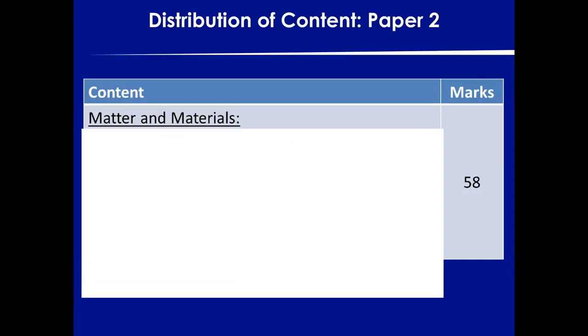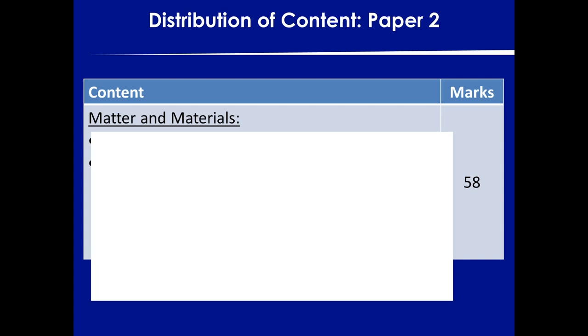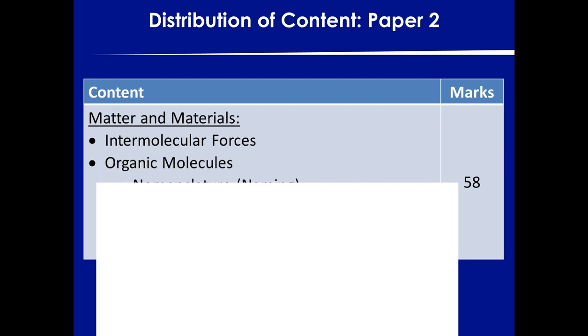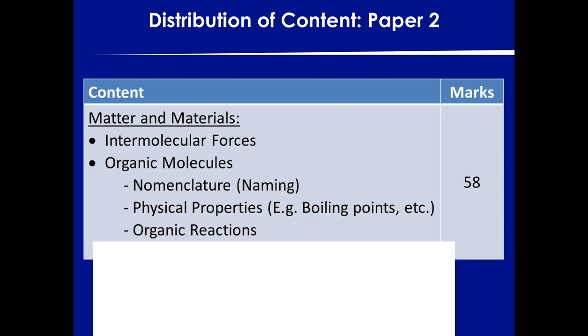Your chemistry paper is in two main sections. The first one being matter and materials, which is 58 marks. This basically consists of the intermolecular forces — which you did in Grade 11 — the boiling point, vapour pressure, melting point of organic molecules, and all your naming and organic reactions. So 58 marks covers intermolecular forces, which is normally included as part of the organic section.